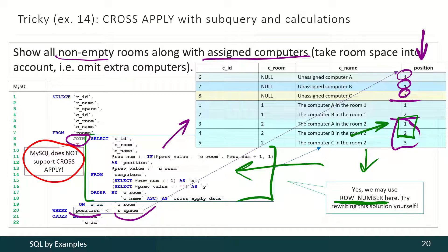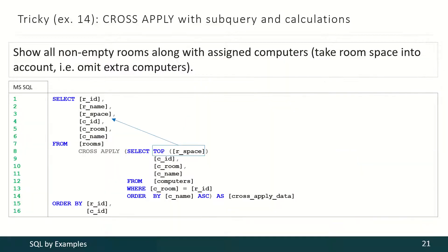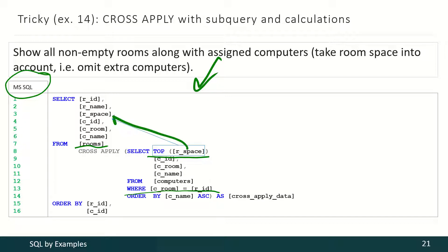For instance, if a room has space for only two computers, only those two records will be taken into account. With Microsoft SQL Server we may use the following approach: for each room we have to select a list of computers from that room, and that list should contain no more records than the space of that room is. And that's all — it's that simple. That's how we get our final result.